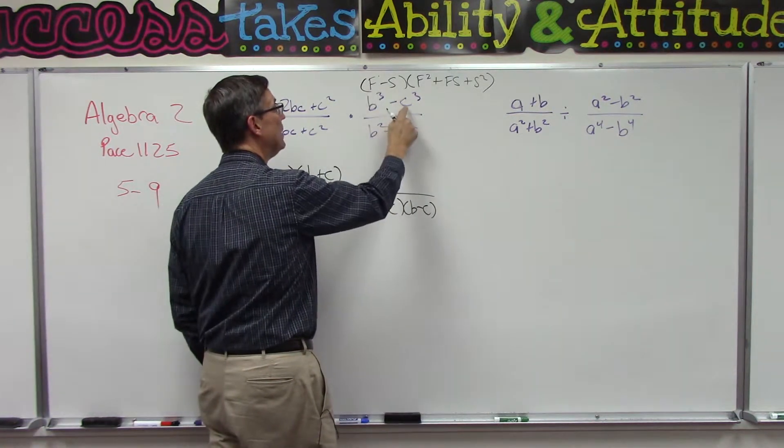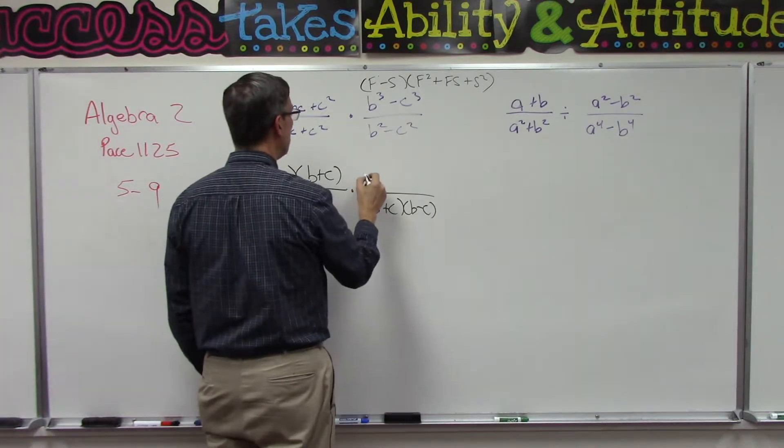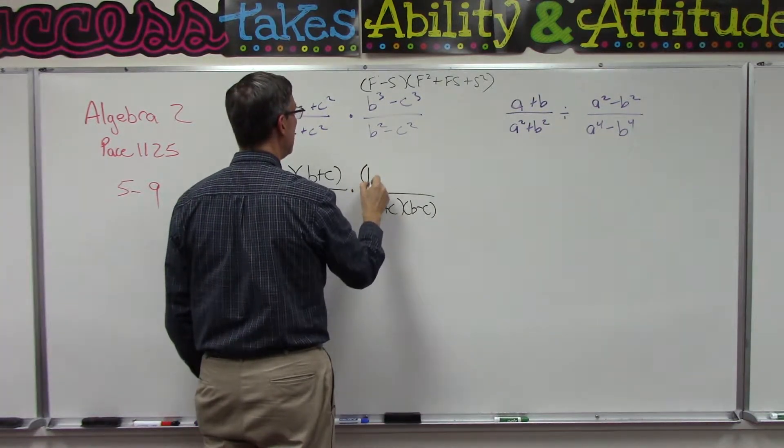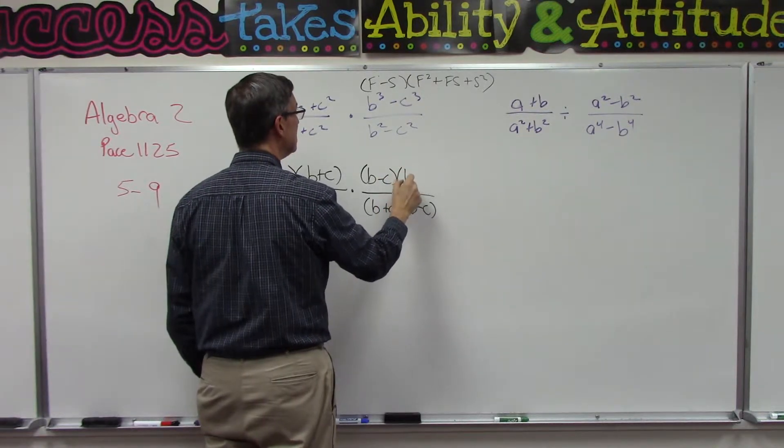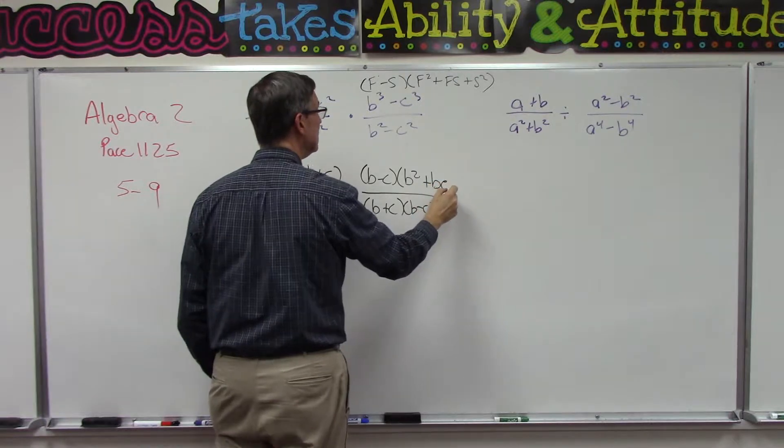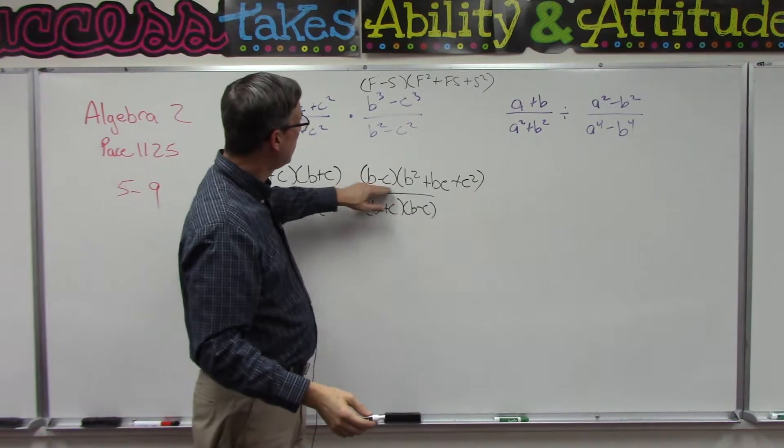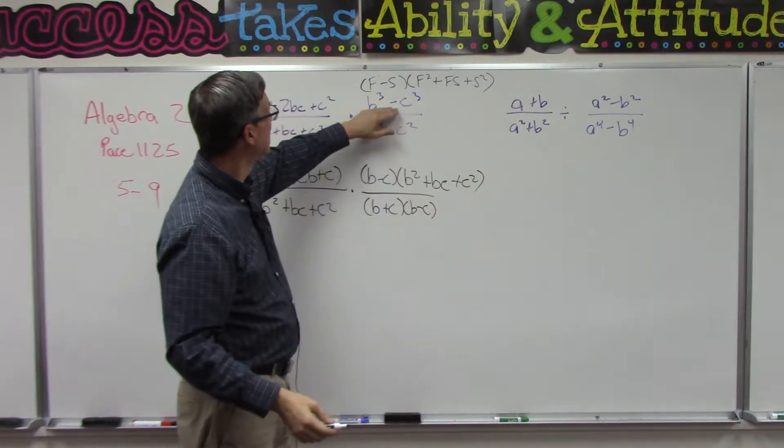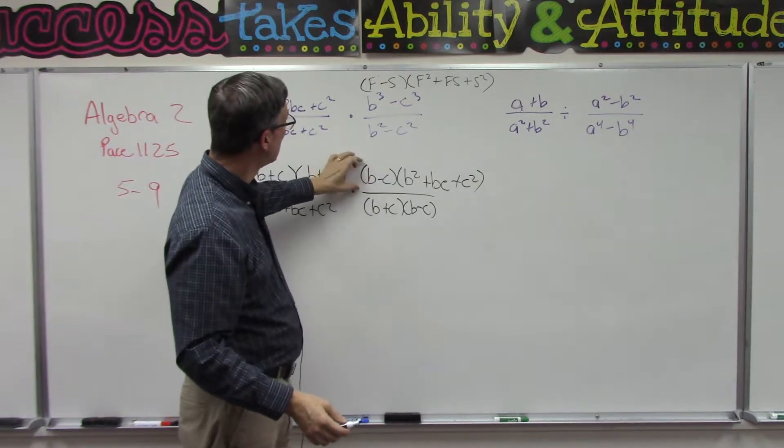But we're going to use b for f, c in place of s. So I'm going to plug in here and have (b - c)(b² + bc + c²). Are you following what I'm doing to see where all of that comes from? Right from this. So when we factor perfect cubes we come up with this longer template.